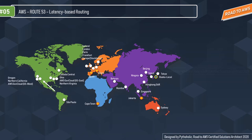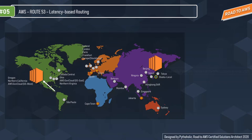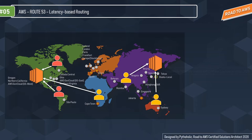Route 53 responds with the value for the selected record, such as an IP address for the web server. For example, suppose you have elastic load balancers in US West Oregon and in Asia Pacific Singapore, with latency records created for each. When a user in London enters your domain name, Route 53 checks latency between London and Singapore versus London and Oregon, and responds with the IP address of whichever region has lower latency.